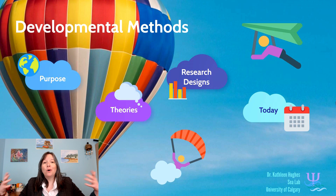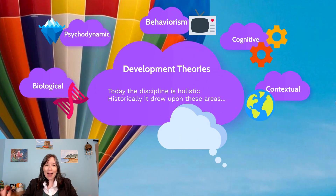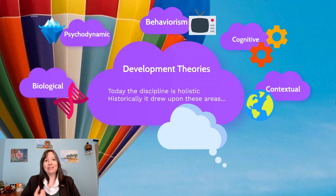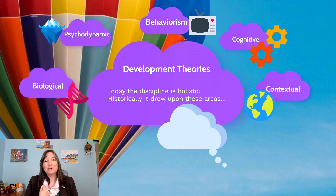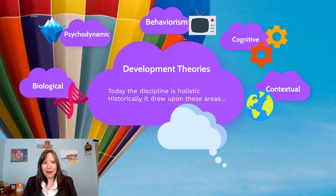Now that we've talked about some of the general overviews in developmental psychology, it's important to launch into the theoretical backgrounds. Because we're holistic, we tend to draw on biological, psychodynamic, behavioral, cognitive, and contextual theories, wrapping them all into one in developmental psychology. The discipline is so holistic, and historically we've drawn upon lots of different areas. I tend to draw on behaviorism and contextual the most, but I definitely draw on all five theories.